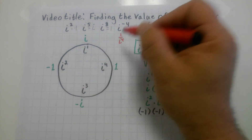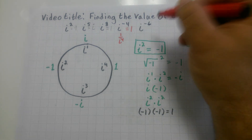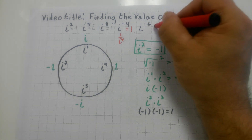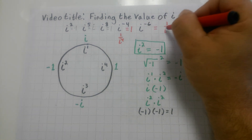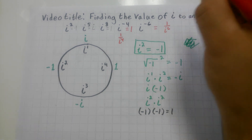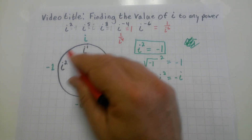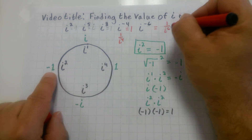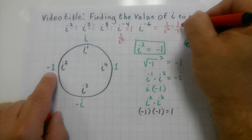A tricky one — i to the negative fourth. Well, isn't that one over i to the fourth? Negative exponent, bad attitude, you send them downstairs. So one over i to the fourth: counting first, second, third, fourth — that's going to be one over one. That equals one.